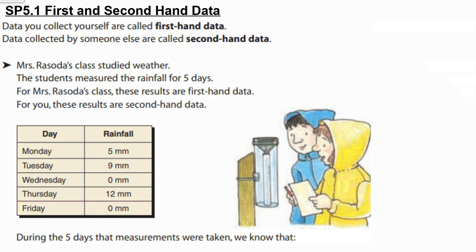In this lesson we will be looking at first and second-hand data. Data — numbers or information from a survey you collect for yourself — are called first-hand data. Data collected by someone else are called second-hand data.